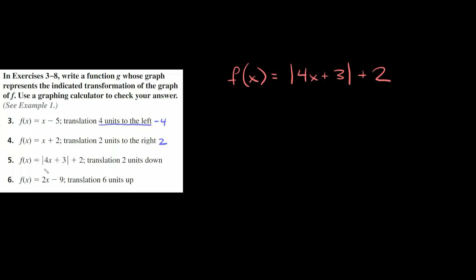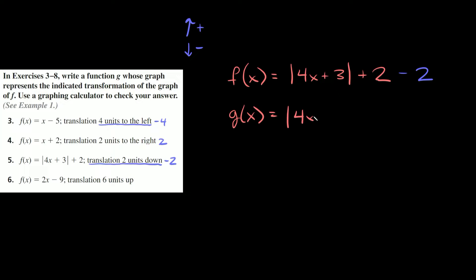Next, number five: f of x is equal to the absolute value of 4x plus three, plus two. This time we're going to translate it two units down. Whenever you translate a function up or down, going up is a positive number and going down is a negative number. For vertical translations, you don't need that x minus h — all you have to do is add or subtract the number at the very end. It says translate two units down, so that's a minus two. So g of x equals the absolute value of 4x plus three, and then plus two minus two is just zero. So g of x is simply equal to the absolute value of 4x plus three.